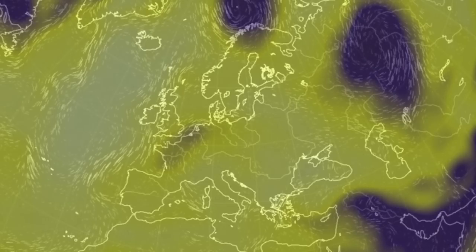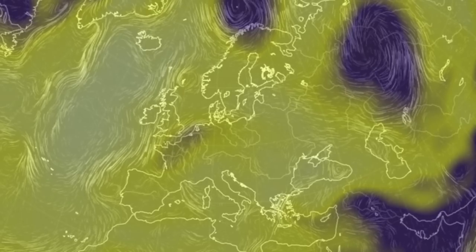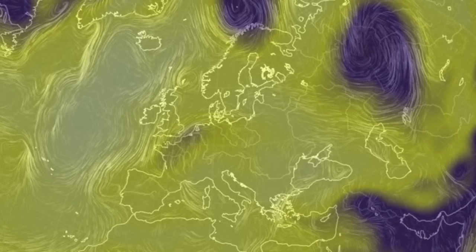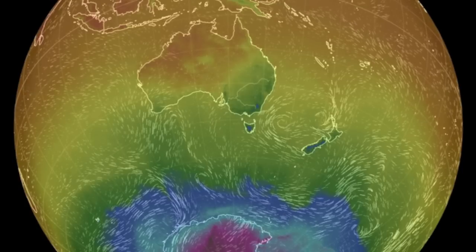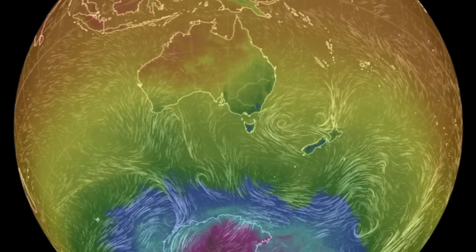High and low pressure team up to drive unseasonably cold air down the western coastlines of Europe. Got twin lows west of New Zealand and a convergence aiming at southwestern Australia too.